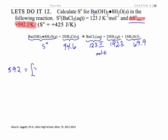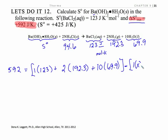So we're going to take our products. So I have one barium chloride, it's 123, plus two ammonias, times 192.3, plus 10 waters, at 69.9. And now I'm going to subtract my reactants. I've got one unknown, and I've got two of the ammonium chlorides, 94.6.